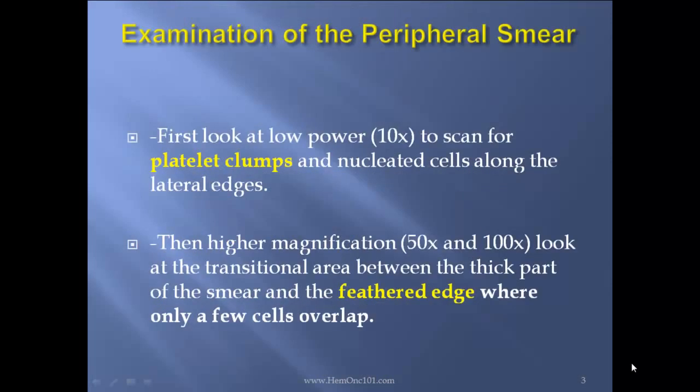Examination of the peripheral smear. First, look at low power — 10x — to scan for platelet clumps and nucleated cells along the lateral edges. Then at higher magnification, 50 or 100x, look at the transitional area between the thick part of the smear and the feathered edge where only a few cells overlap.